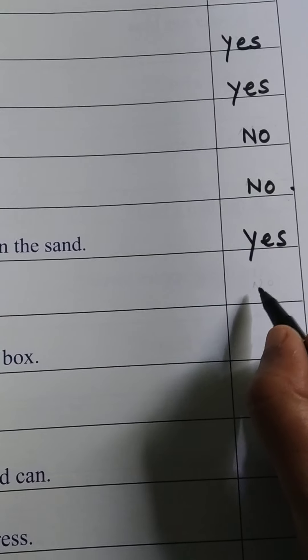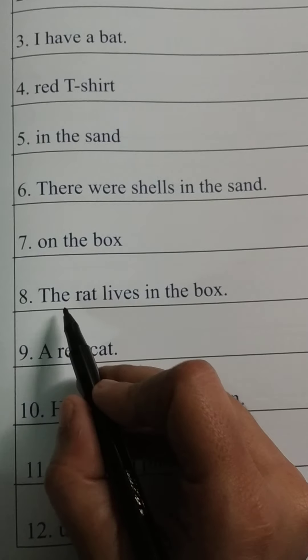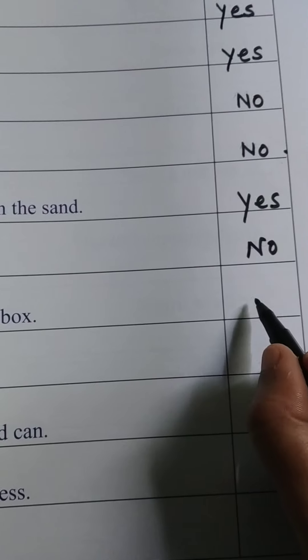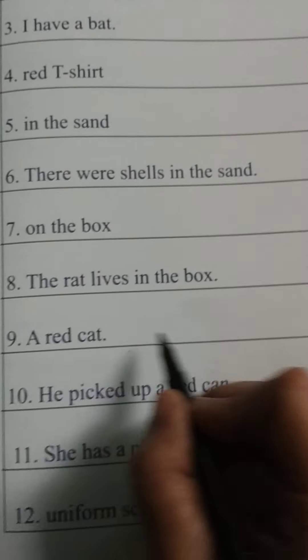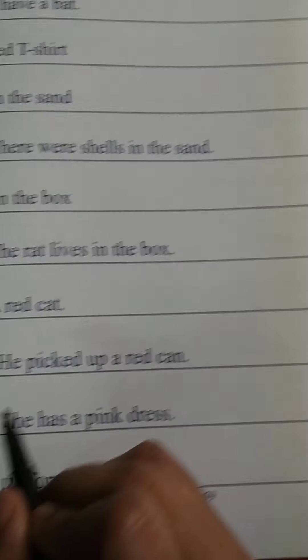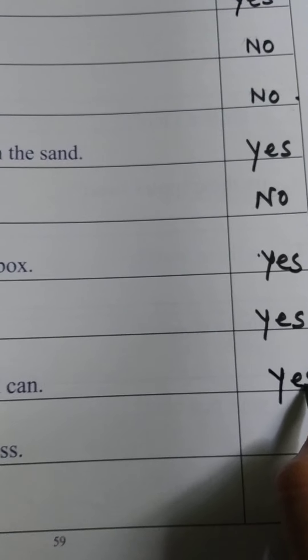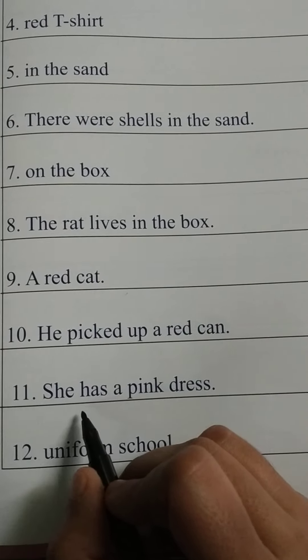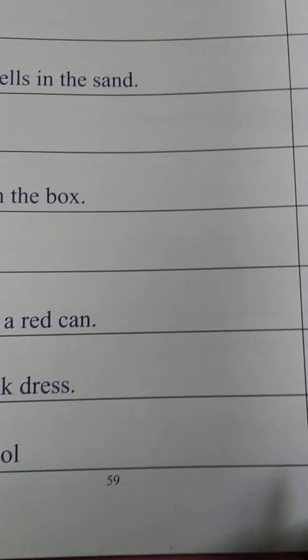On the box — no, it is not a complete sentence. The rat lives in the box — yes, it is a complete sentence. A red cat — he picked up a red cat — yes. She has a pink dress — yes. Uniform school — no.